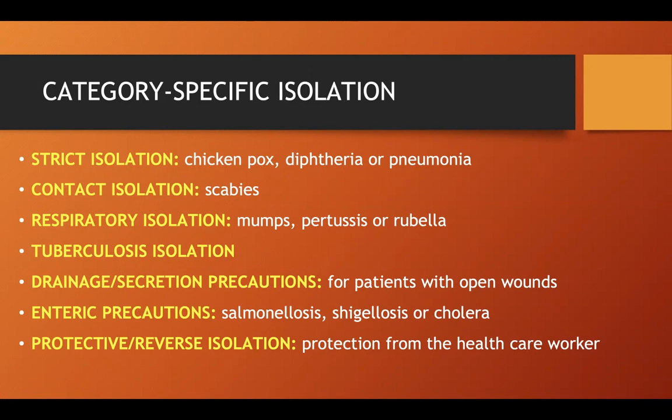For category-specific isolation, this includes source isolation and reverse isolation. Strict isolation is for patients with contagious diseases like chickenpox, diphtheria, or pneumonia — also known as source isolation. Contact isolation is for diseases transmitted through direct contact with a patient, such as scabies. Respiratory isolation is given to patients with diseases transmitted through air, such as mumps, pertussis, or rubella.